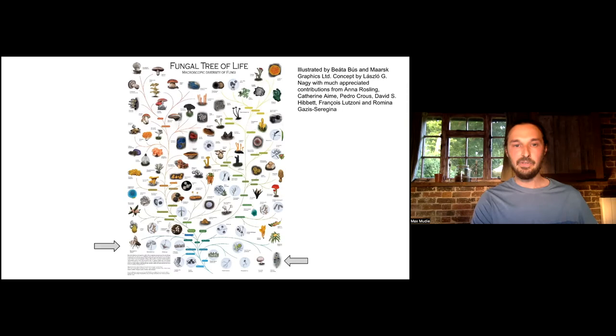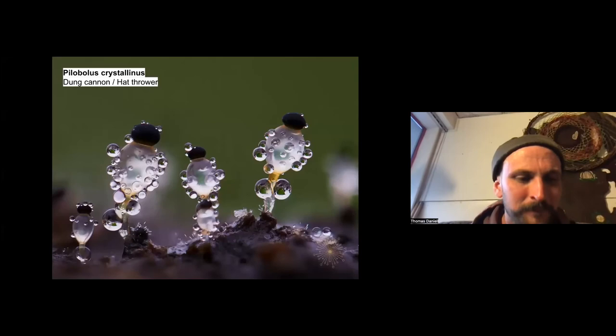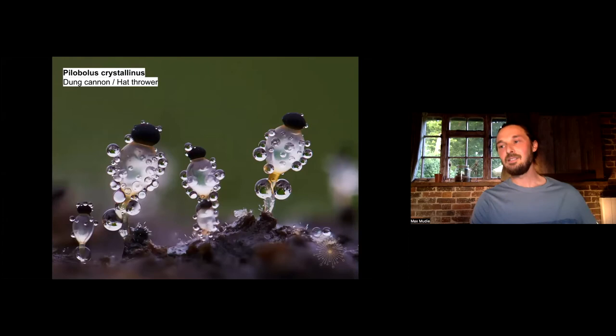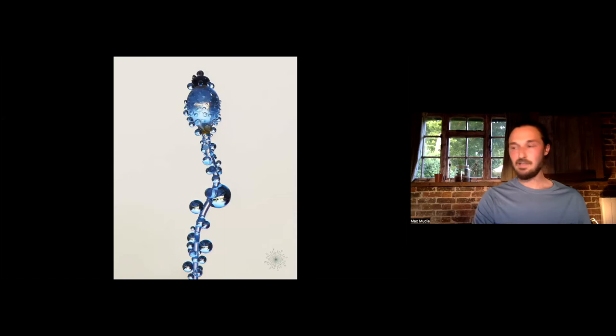Pilobolus crystallinus is a dung cannon or a hat thrower. It gets its name because pressure builds up and these little black sporangia shoot off and they land in vegetation which is then eaten by grazing animals, pass through digestive tract, and then it grows again in the manure. Interestingly, this one was found in compost. I guess that the conditions in the tumbler maybe have mimicked the conditions for the animal's stomach and that was able to fruit. Another example of Pilobolus.